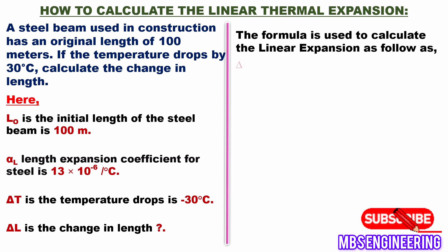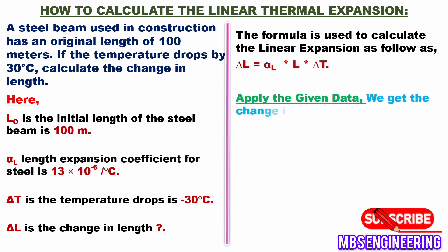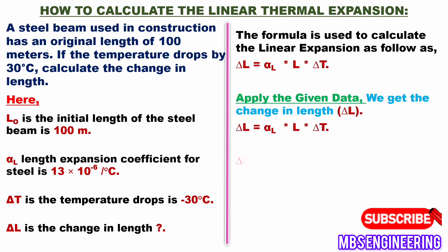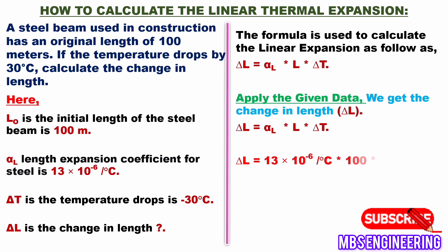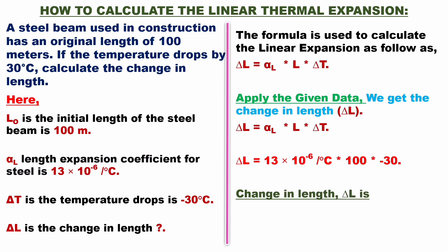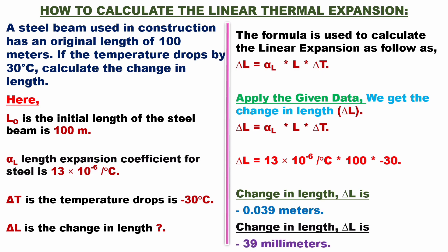Applying the formula delta L = alpha_L × L₀ × delta T, we get: delta L = 13 × 10⁻⁶ per °C × 100 × (−30). The change in length delta L equals −0.039 meters, or −39 millimeters.